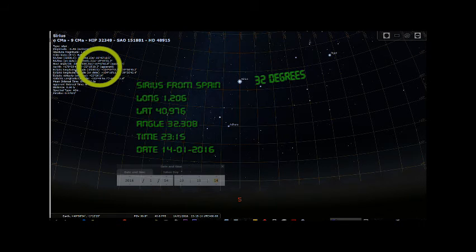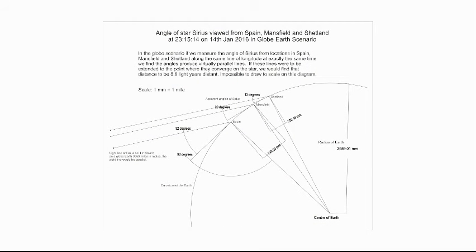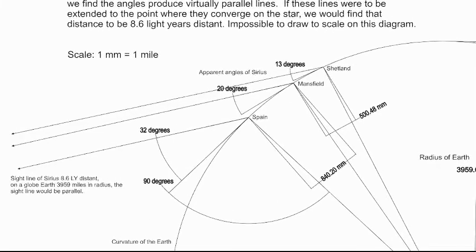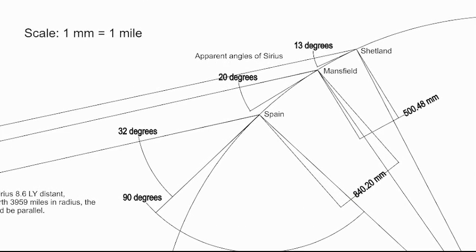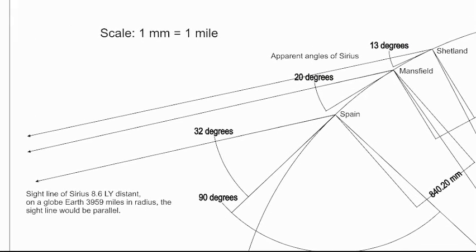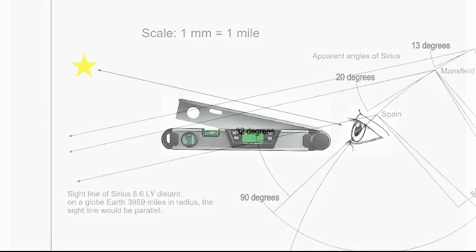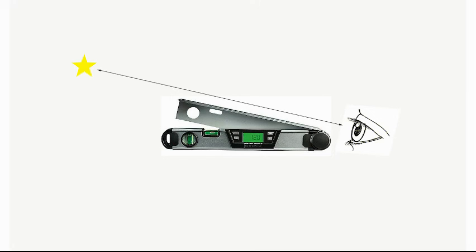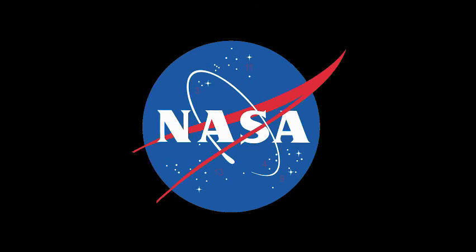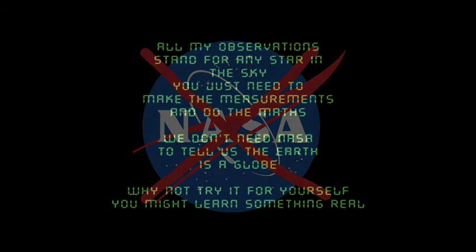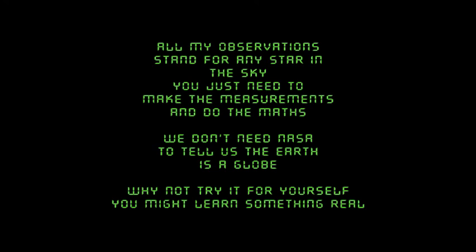Since Sirius cannot appear in two places at the same time, something must be wrong with the flat Earth model. If however we look at a diagram of a spherical Earth and plot the same measurements using a scaled diagram with the Earth having a radius of 3,959 miles, we can clearly see that Sirius would appear in the sky at the predicted angle from all three locations. This is because Sirius is 8.6 light years away and its sight lines would appear parallel from all three locations, only merging at the star 8.6 light years away. From measurements of a star taken using a simple instrument from three locations at the same time, we can clearly demonstrate the Earth cannot be flat and must be a globe — no need for NASA or photos from space. Simple observations and geometry is all it takes.